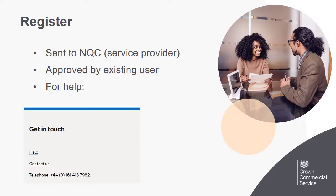Your details are sent to NQC, our service provider, to review. If someone else in your organisation is already signed up to the system, they'll be sent an email to approve your registration. If you're the first person from your organisation to sign up, then you'll become the approver for other colleagues. When you receive your registration confirmation email, this will be from NQC and may be titled supplier registration service, as this is the name of the overall service.